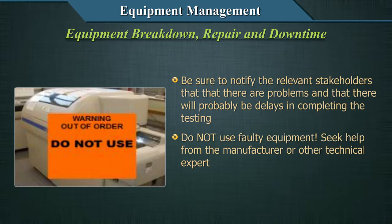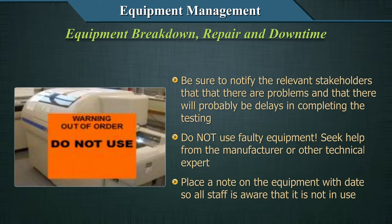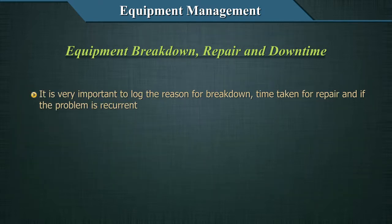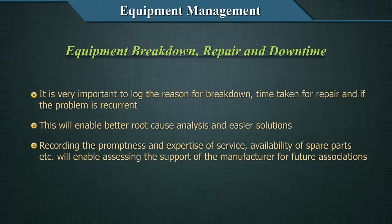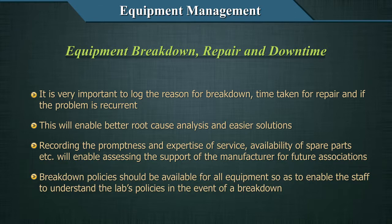Seek help from the manufacturer or other technical expert. Place a note on the equipment with the date so all staff are aware that it is not in use. It is very important to log the reason for the breakdown, the time taken for the repair, and if the problem is recurrent. This will enable better root cause analysis and easier solutions. Recording the promptness and expertise of service and availability of spare parts will enable assessing the support of the manufacturer for future associations. Breakdown policies should be available for all equipment so staff understand the lab's policies in the event of a breakdown.